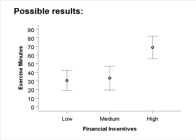This figure illustrates some possible results from the study. Exercise minutes are plotted on the y-axis ranging from 0 to 90, and the three treatment conditions of the financial incentives independent variable are on the x-axis. With this set of fictitious outcomes, the high incentive condition scored relatively high on exercise minutes, the medium incentive condition scored lower, and the low incentive condition scored lower still.